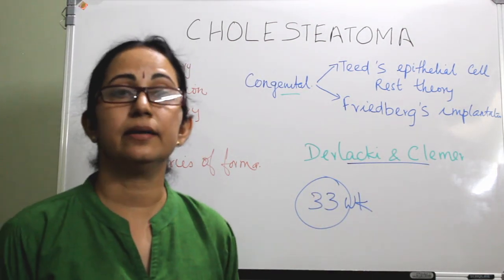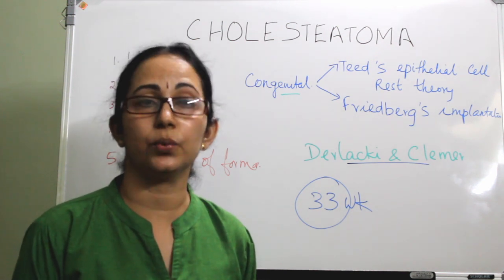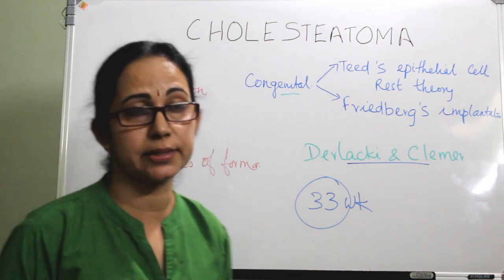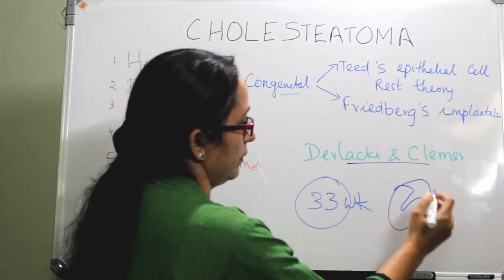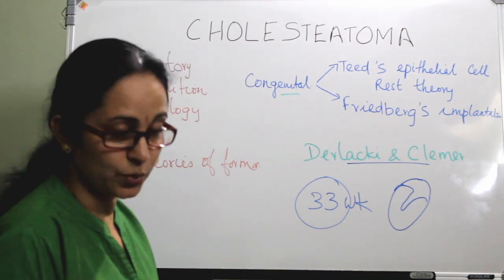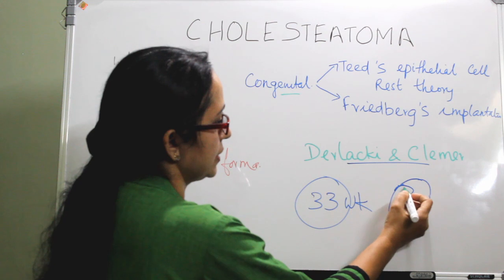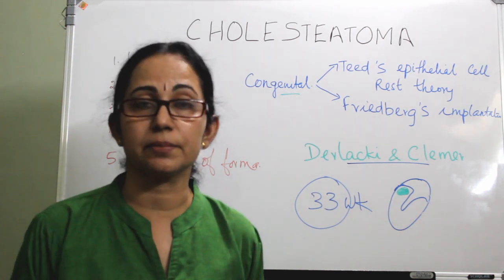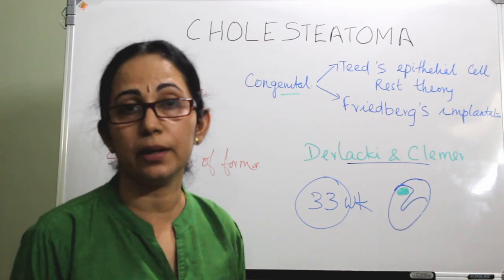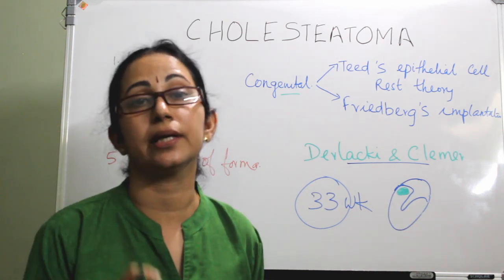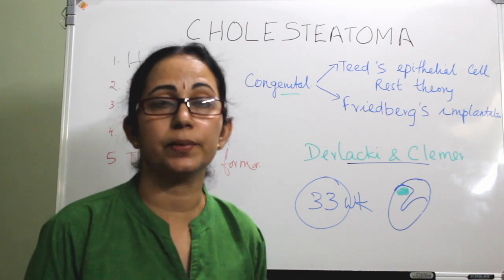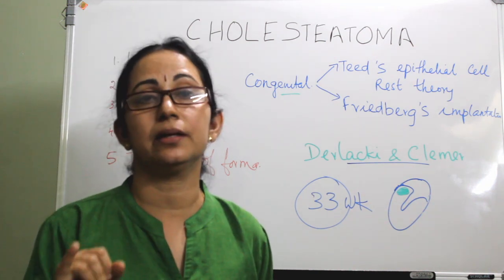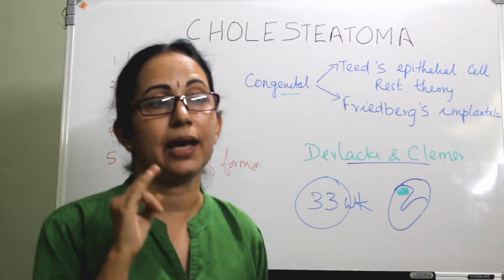Derlacki's criteria for classifying congenital cholesteatoma require three conditions: first, there should be a pearly white mass behind an intact tympanic membrane; second, the pars tensa and pars flaccida should be normal; and third, there should be no pre-existing ear infection or ear disease.